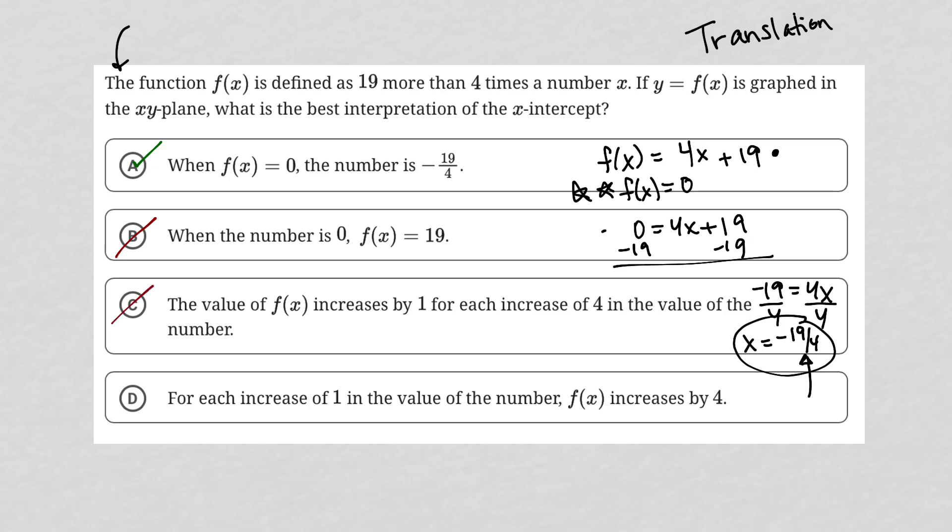Choice D, for each increase of 1 in the value of the number. Again, that sounds like a slope. So choice D is gone. So choice A, as expected, is the correct answer. Again, f of x equaling 0 is what you will always do or look for when you have an x-intercept. And this negative 19 fourths is what we actually found when we solved for x after setting f of x equal to 0. So choice A is the best answer here.